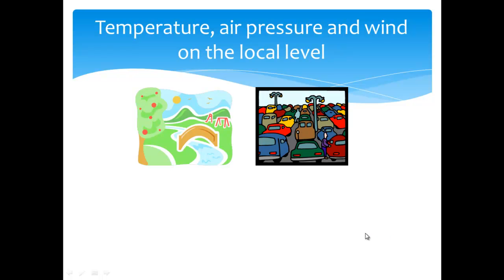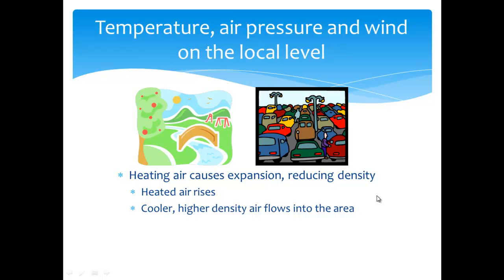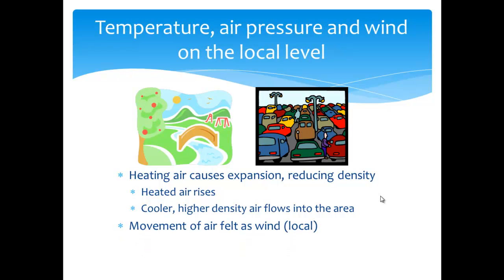Remember the park and the parking lot? Recall that as air over the parking lot was warmed during the day, more so than the air over the park, a pressure difference formed, resulting in a wind blowing from the park toward the parking lot. This is a local wind that occurred because heating air causes expansion, reducing the air density. As heated air rises, cooler, higher density air flows into the area. This movement of air is felt as a local wind — the result of air pressures trying to equalize.